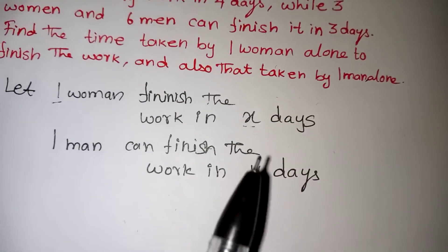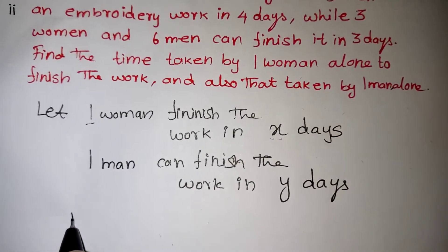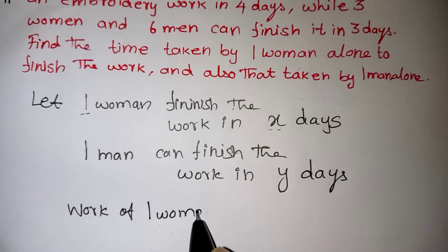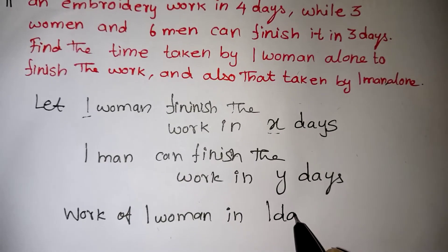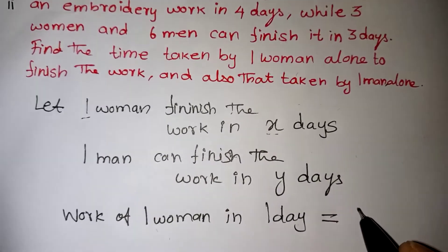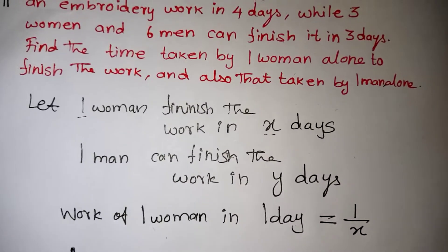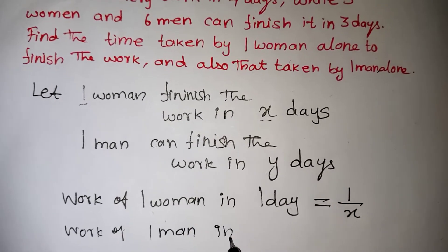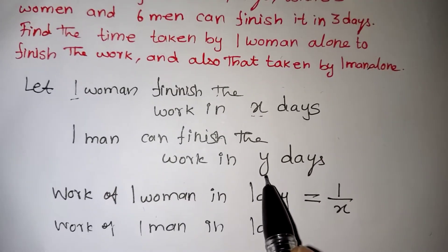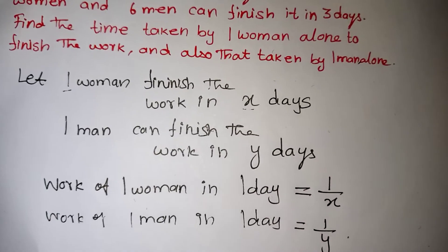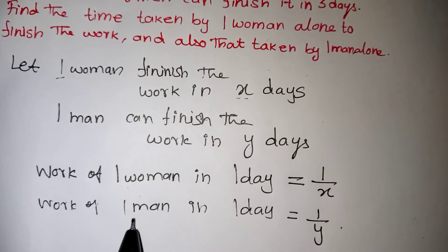Here we have taken 1 woman can finish the work in x days. So work of 1 woman in 1 day — totally she is taking x days, so in 1 day she will be completing 1 by x. Same way, work of 1 man in 1 day — totally 1 man is taking y days to complete the work, so in 1 day he will be completing 1 by y.